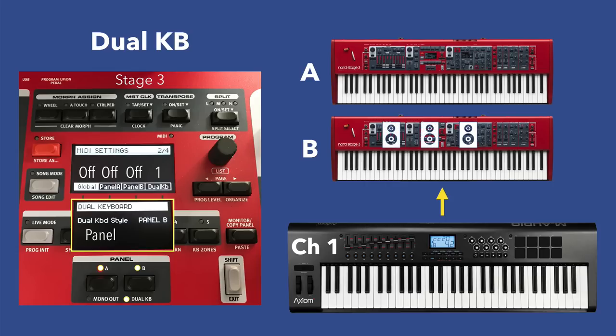The fourth option is the Panel option, which means the entire Panel B will be controlled by the external keyboard. In panel mode, splits do have effect — if I split my Nord Stage 3, Panel B takes hold of those splits and the external keyboard can play in split mode, which is mind-blowing. In panel mode, the Nord Stage 3 keyboard always controls only Panel A: the Stage controls Panel A, and the external keyboard controls Panel B — very powerful.